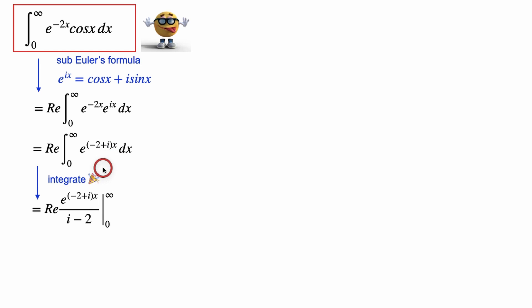This e to the x is like our friend to integrate, right? So when we integrate this, it becomes the real part of e to the negative 2 plus ix, divided by i minus 2, evaluated from 0 to infinity.